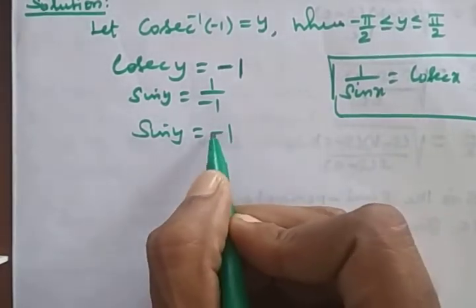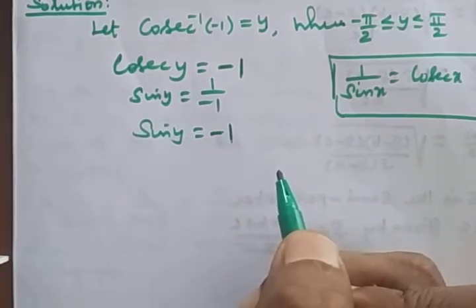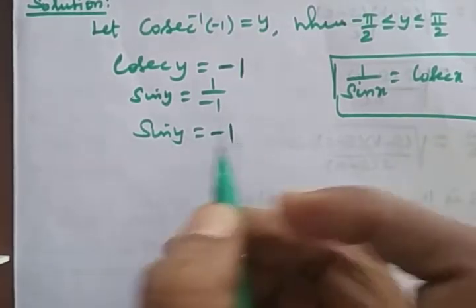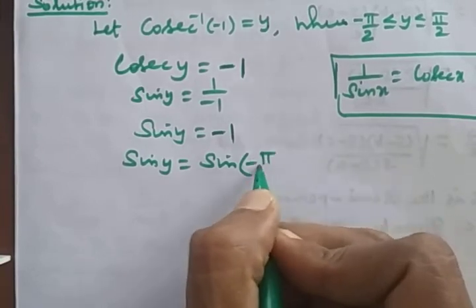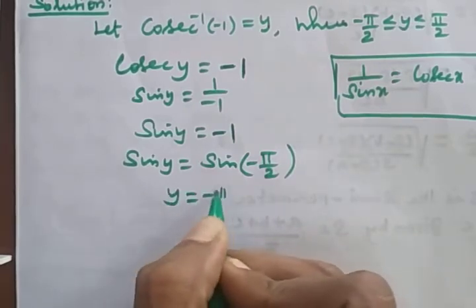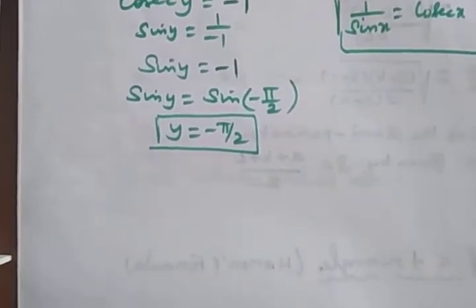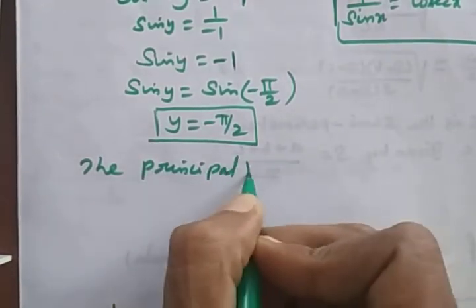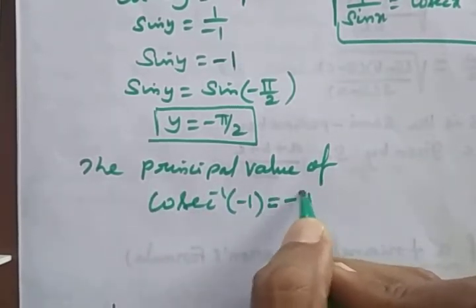So sin y = −1. Since sin(−π/2) = −1, we get y = −π/2. Therefore, the principal value of cosecant⁻¹(−1) is −π/2.